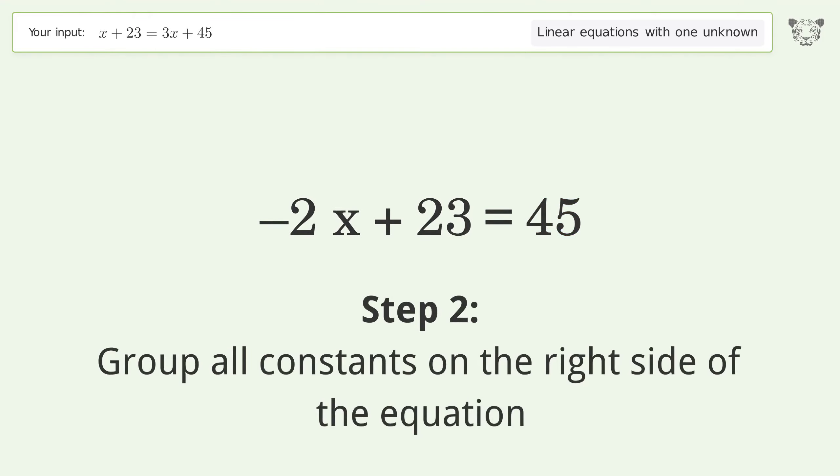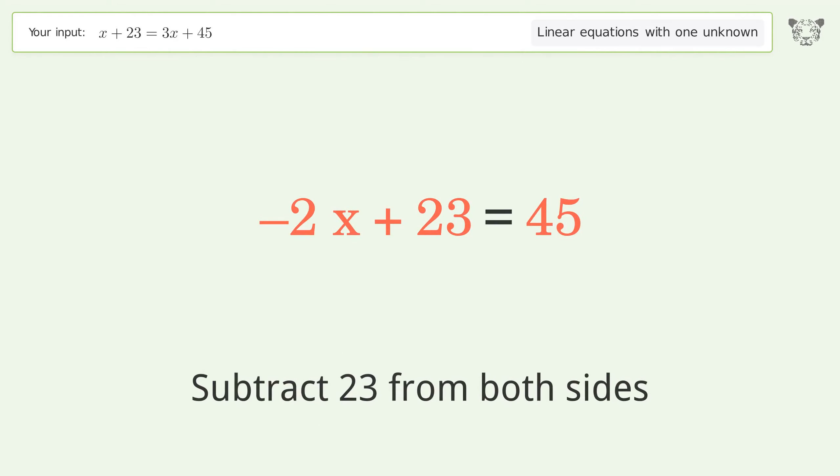Group all constants on the right side of the equation. Subtract 23 from both sides.